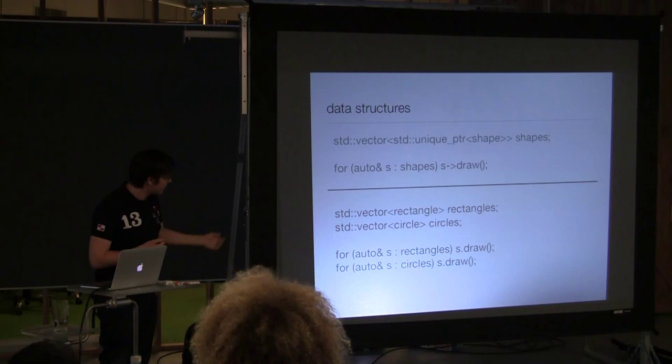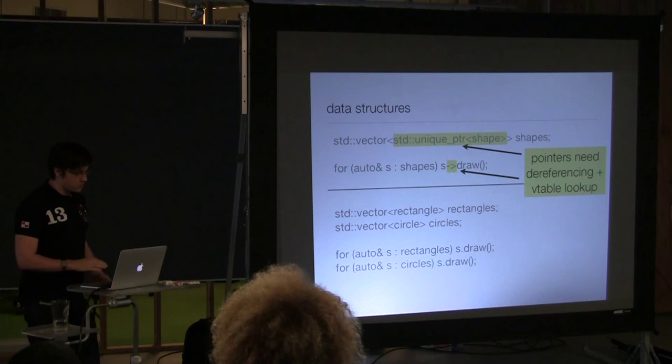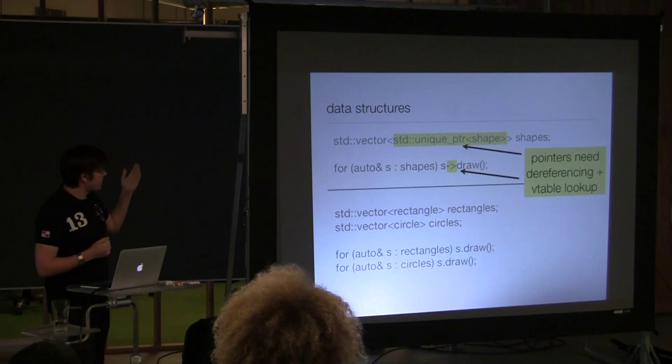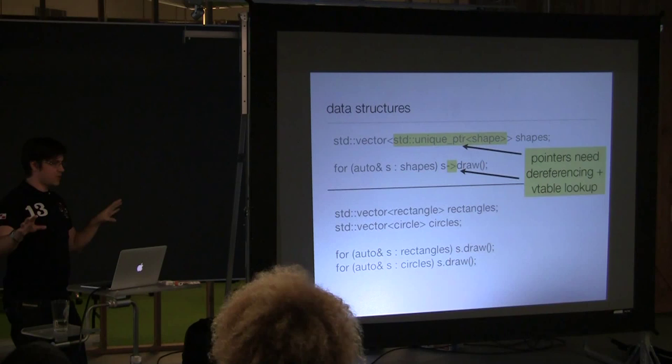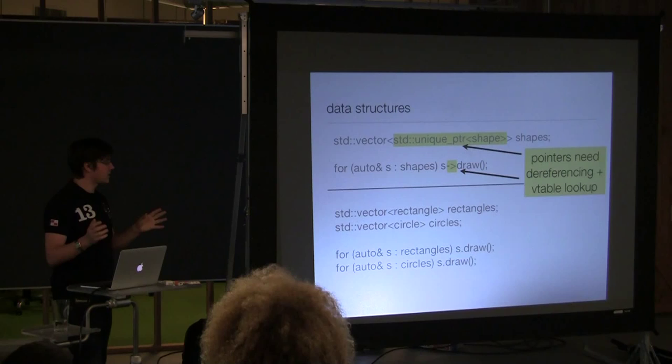So, annotating this and looking at what's going on a little bit, the fact that we have pointers in this array means that all of our data that we're accessing is going to be spread out in memory, presumably, which means that every access to it is going to be likely to cause another cache miss.